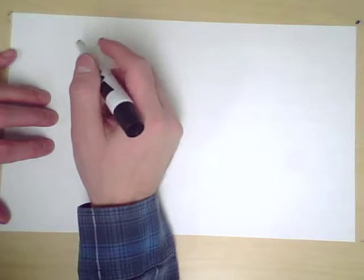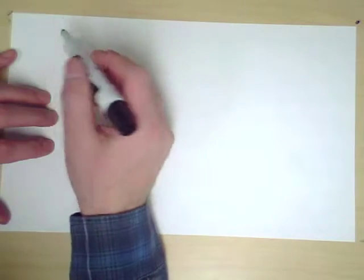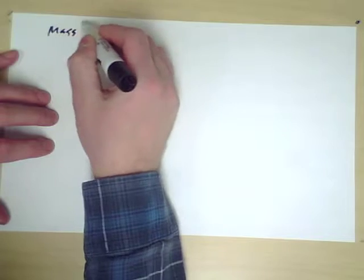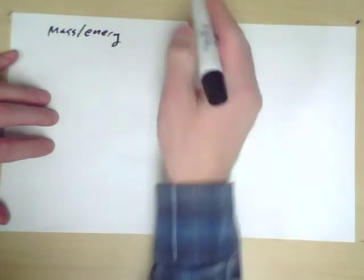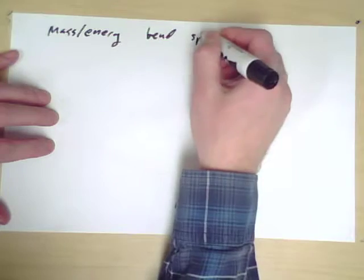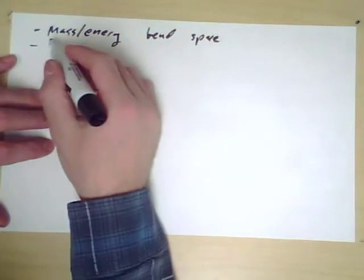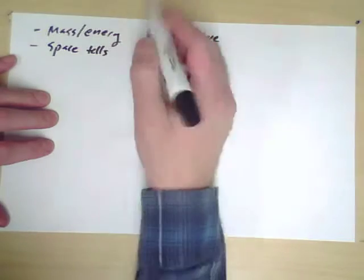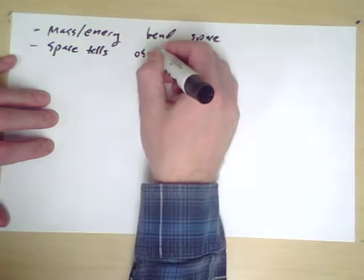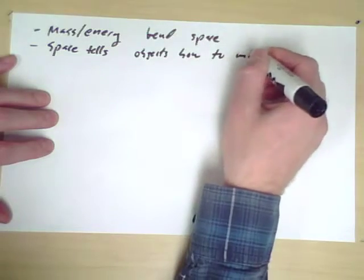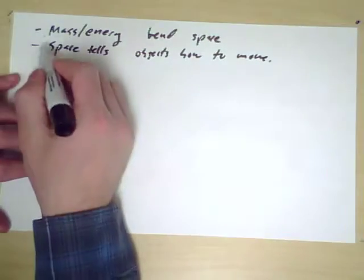I made a glib comment in the previous video about how general relativity depends on the spectral theorem, and I want to take just a moment to explain what I mean by that. The key idea behind Einstein's theory of general relativity is that we have two ideas: that mass and energy bends space, or actually bends spacetime, but I'll say space for now, and space tells objects how to move.